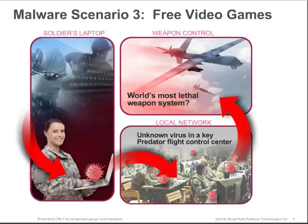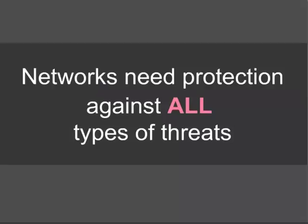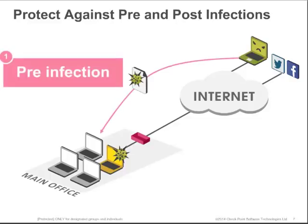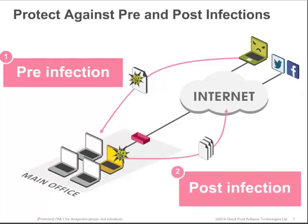But do you want to take a chance with the control of the world's most lethal weapon system? Networks need protection against all types of threats. What I just discussed were three possible but very real scenarios, highlighting that we have to be very proactive against these growing threats. No network is immune to attack, and infections can happen. As such, a two-pronged strategy is very important — one that prevents malware infiltration, and one that mitigates the damage should malware actually gain access to your network.